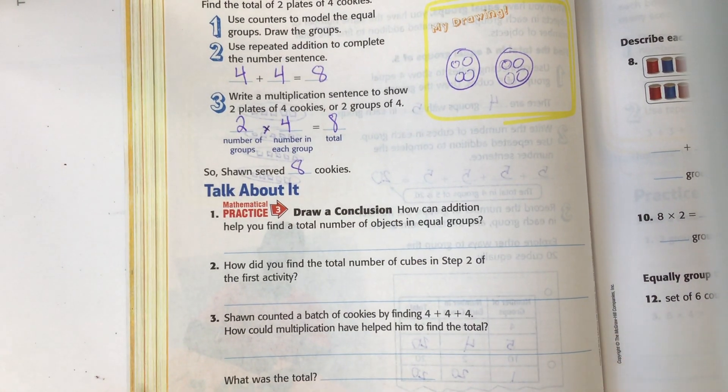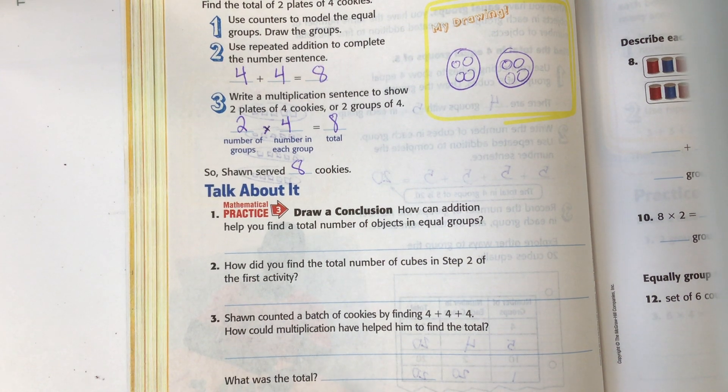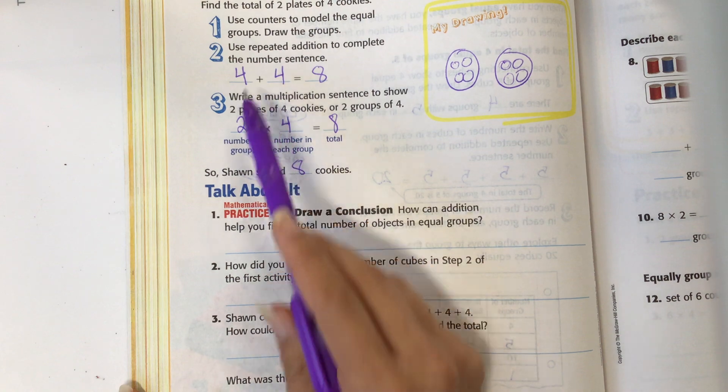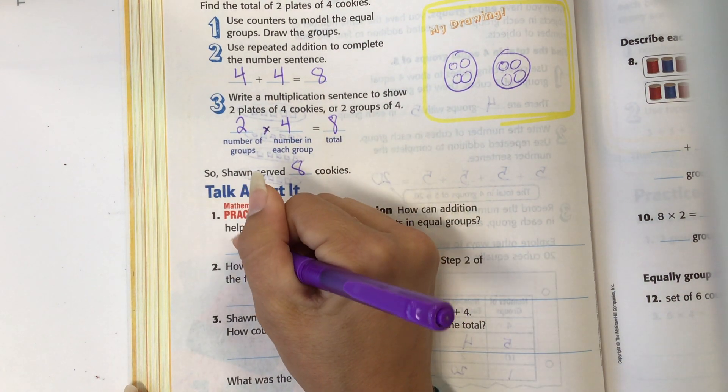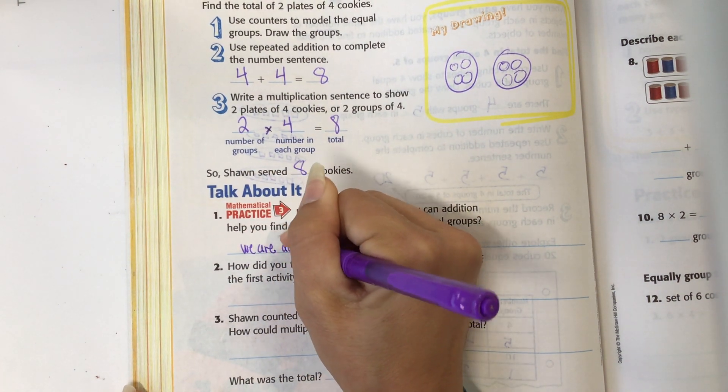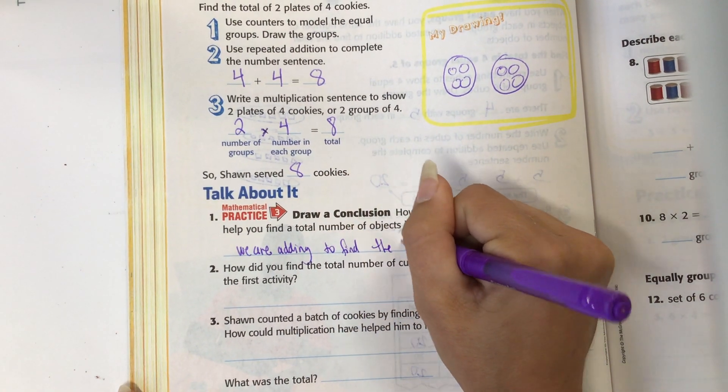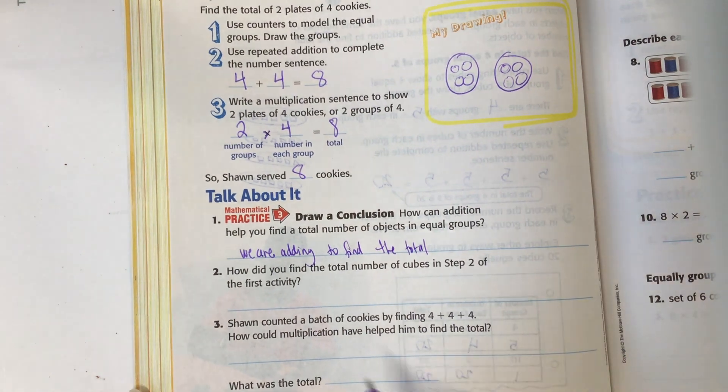Talk about it. How can addition help you find the total number of objects in each group? So addition gives you the total with an addition sign here. So we are adding to find the total number.